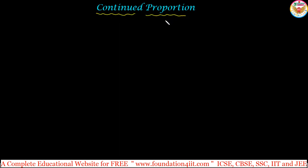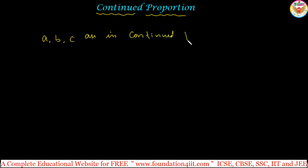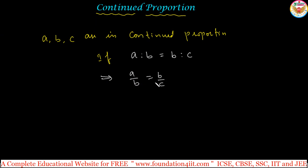Continued proportion. In this topic we will study continued proportion, which involves three quantities. Three quantities are said to be in continued proportion if the ratio between the first and second is exactly equal to the ratio between the second and third. That means if A, B, C are three quantities, then A divided by B equals B divided by C is the rule.